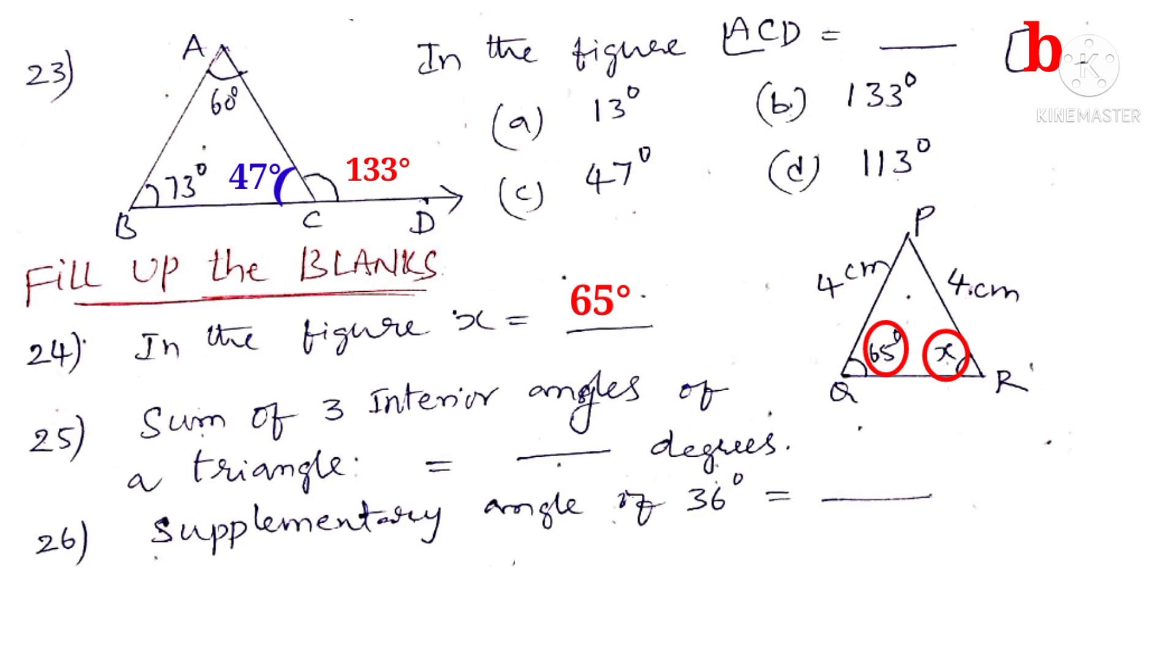Now 25th. Sum of the three interior angles of a triangle is equal to dash degrees. It is 180 degrees. Now number 26. Supplementary angle of 36 degrees is equal to dash. It is nothing but 180 degrees minus 36 degrees which gives 144 degrees. So 144 degrees.